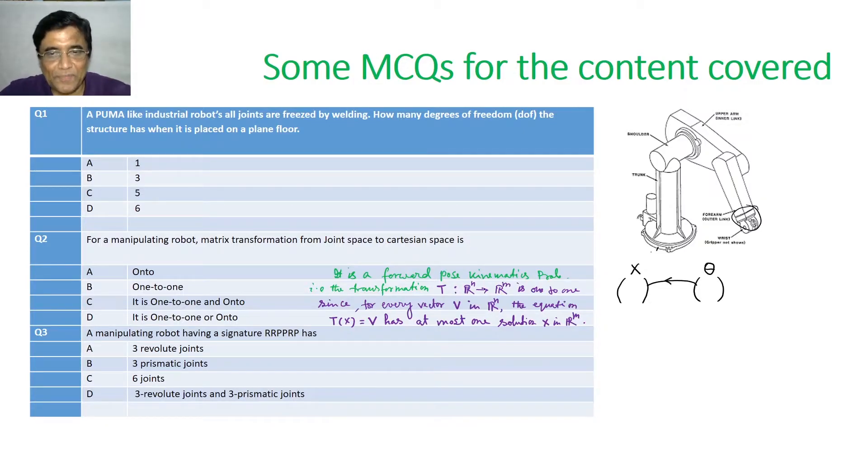By this time you know, you are transforming from joint space to Cartesian space. So, this is basically a forward pose kinematics problem. And, what will be the answer? One-to-one. Why? Because the transformation from range space n to range space n is one-to-one. Because, for every vector V in the range space n, the equation TX equals to V has at most one solution in X in the range space of n.